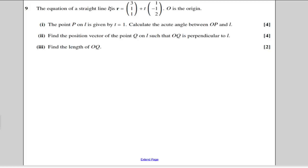It gives you the equation of a line L, and O is the origin. It says that point P is on the line L when T is 1. Calculate the angle between OP and the line L. Well firstly, let's work out where the position vector of P is.